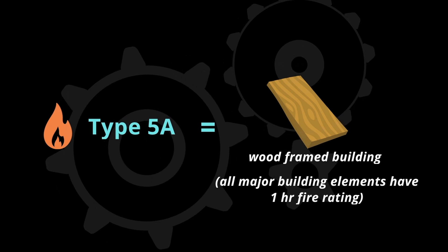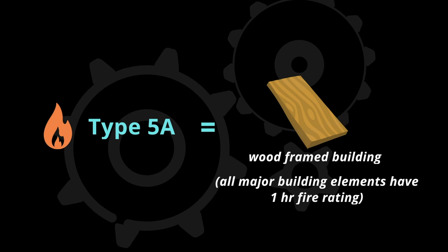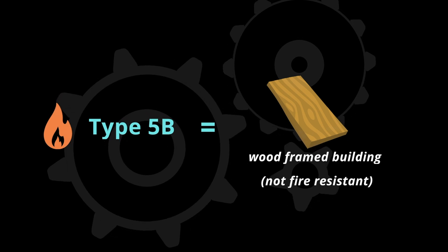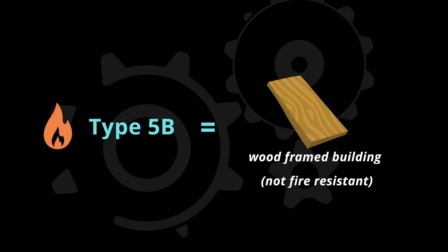Type 5A is a wood frame building where all building elements have a one-hour fire rating, except interior walls that are non-load bearing. Type 5B is also a wood frame building, but its building elements don't have fire ratings.